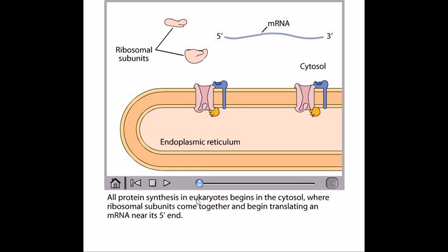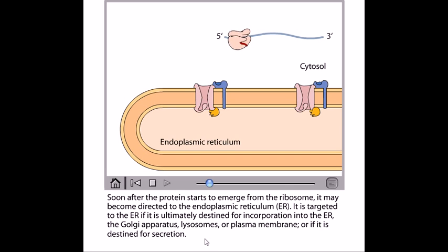So now let us look at that in detail. All protein synthesis in eukaryotic cells begins in the cytosol where the ribosomal subunits come together and begin translating an mRNA near its 5 prime end. Soon after the protein starts to emerge from the ribosome, it may become directed to the endoplasmic reticulum.